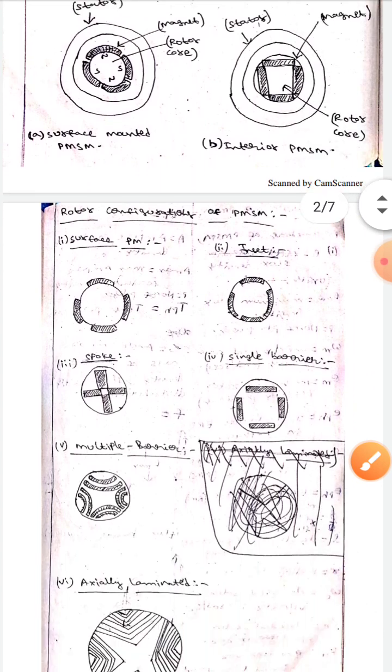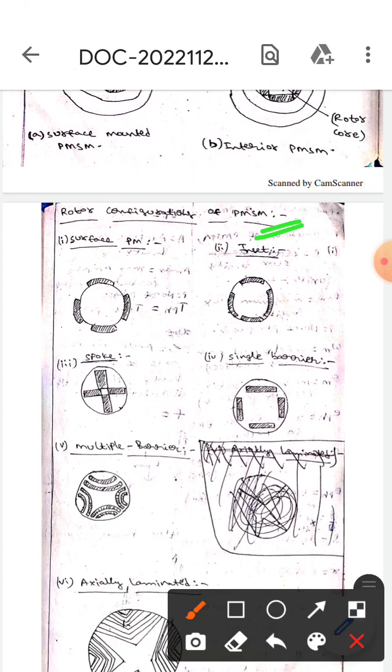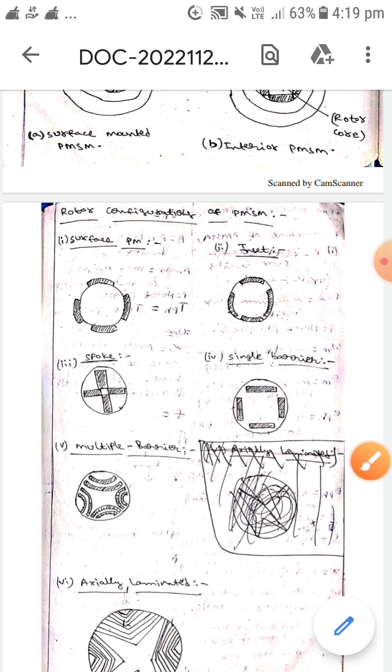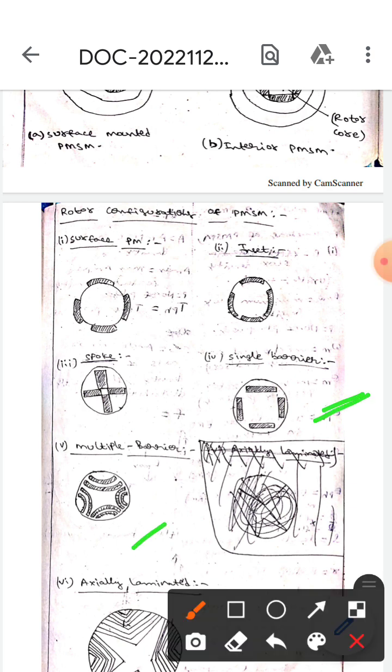This diagram represents surface PM, whereas this diagram represents inset, which is the spoke rotor configuration. This is single barrier. This is the multiple barrier rotor configuration of permanent magnet synchronous motor.